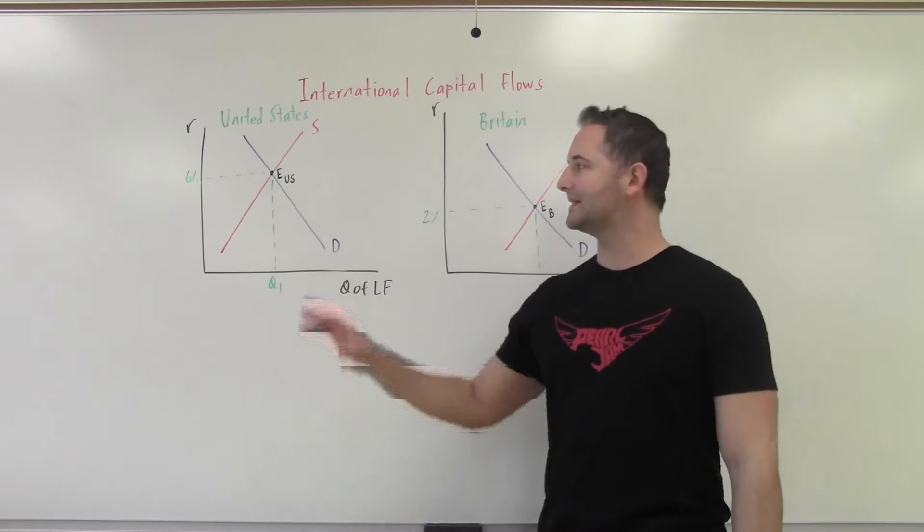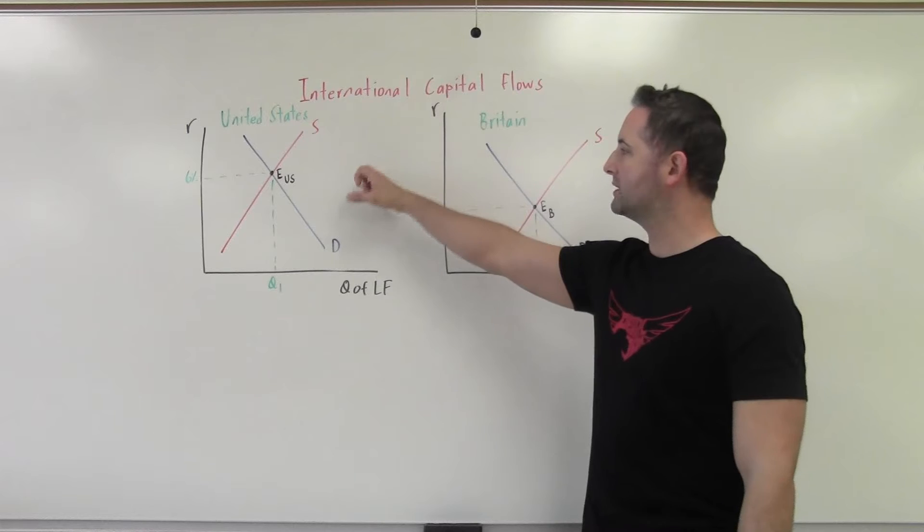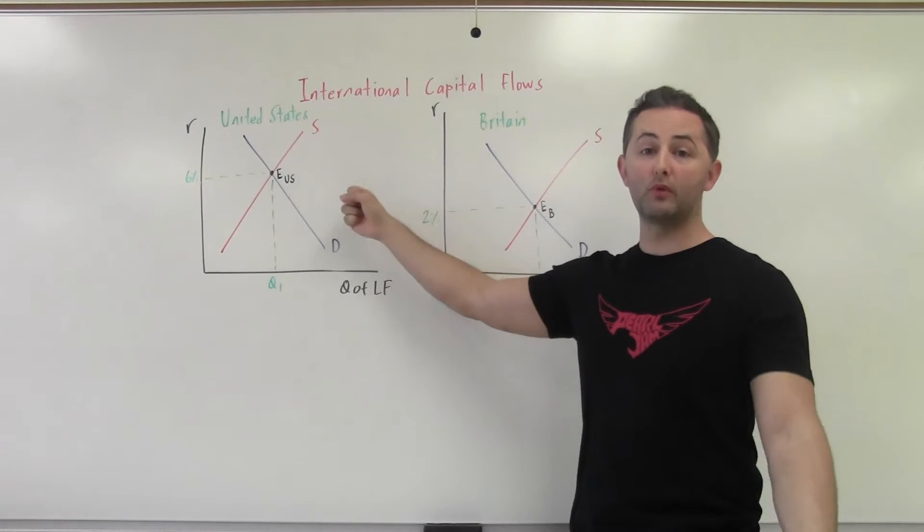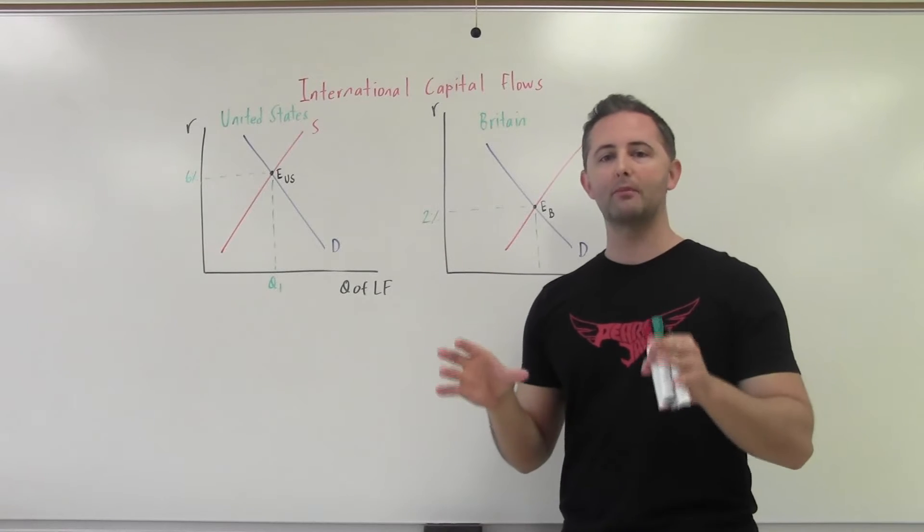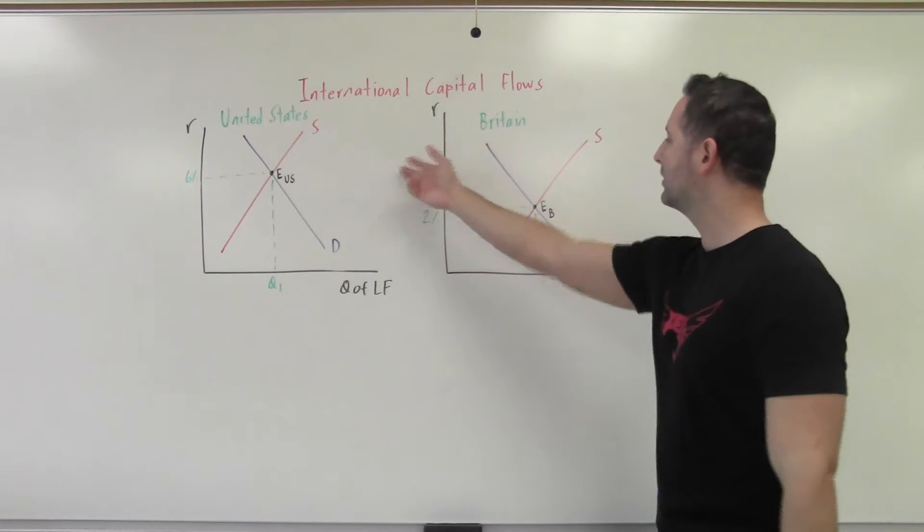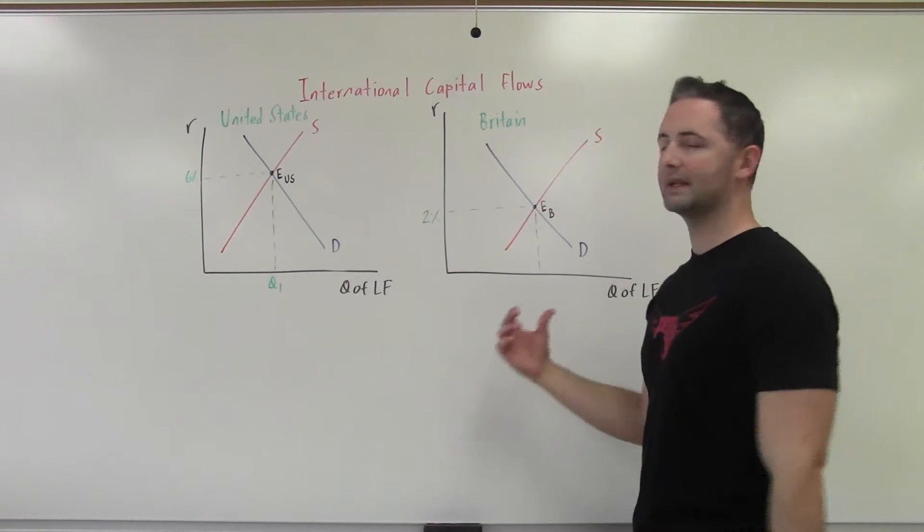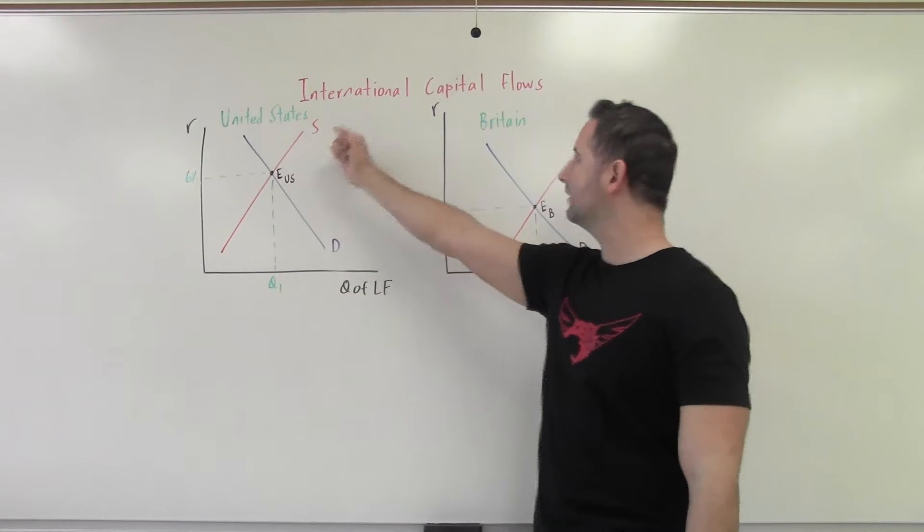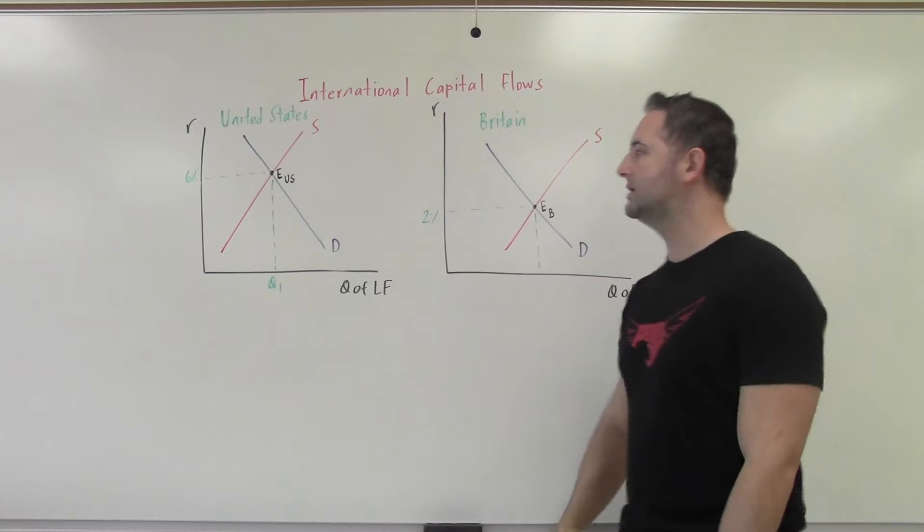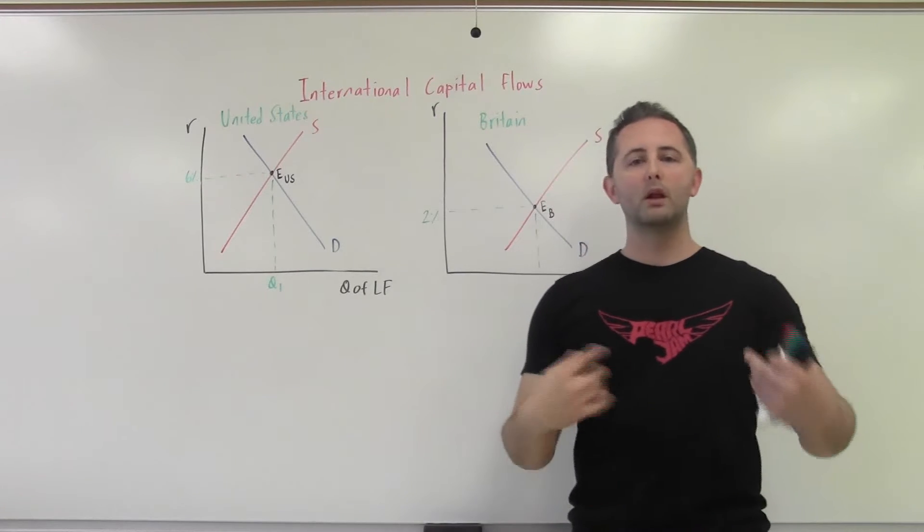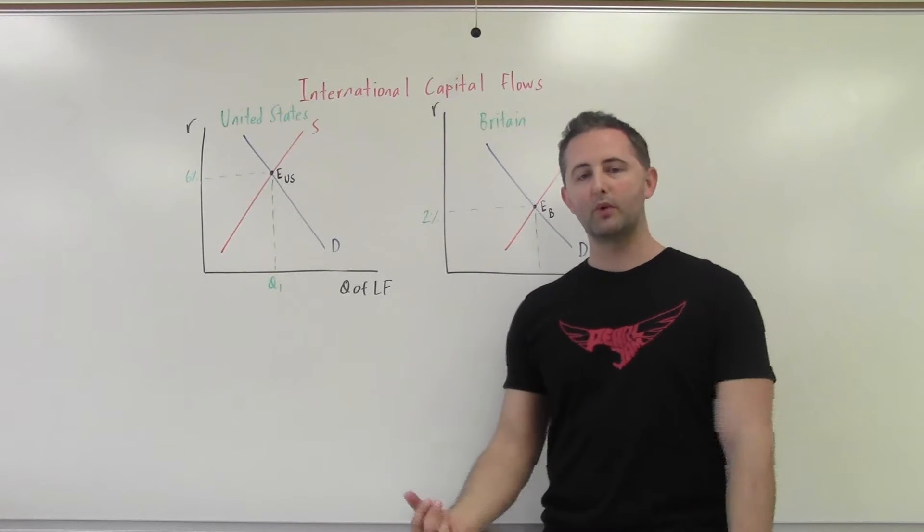But now the difference is, instead of only having a loanable funds model for one economy, which is what we've been doing with closed economies, we now have loanable funds models for two different countries at the same time. We have the United States over here and Britain. What that's going to allow us to do is see how money will flow internationally when we allow that.